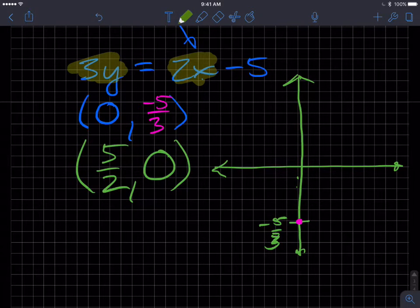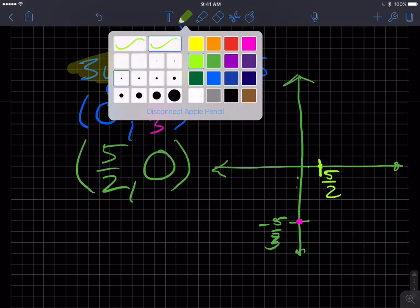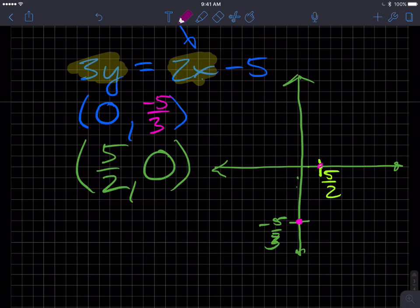And then if I plotted 5 halves. So that's going to be, let's just say that this is 5 halves. And then if we plot that point, go with that pink again. And if we draw that line, some representation of that line.